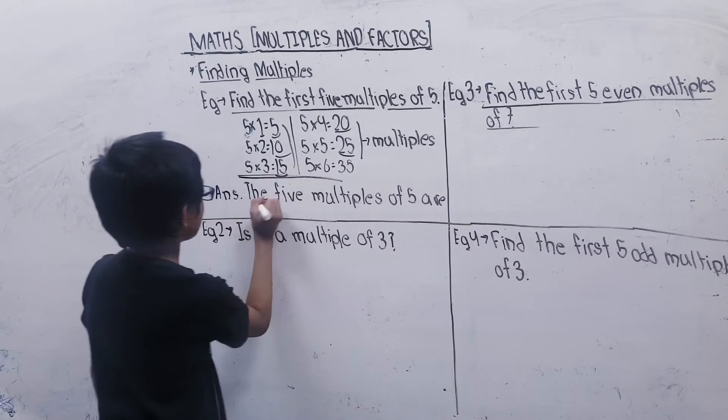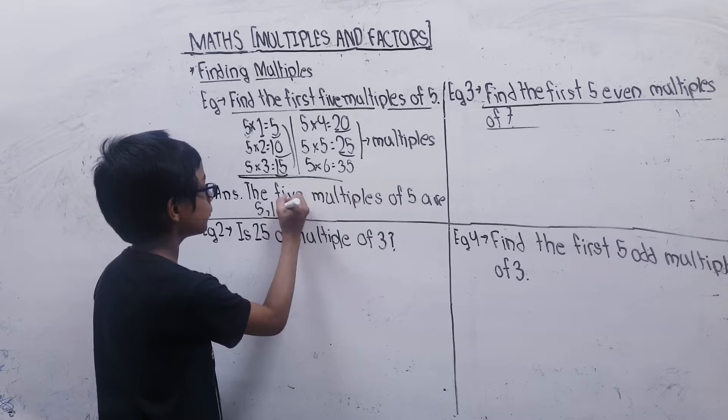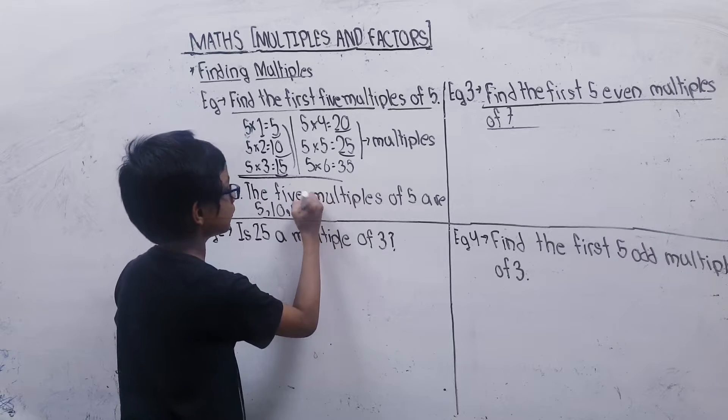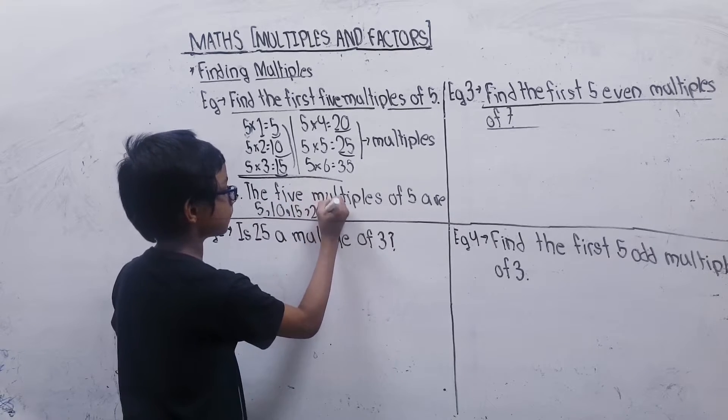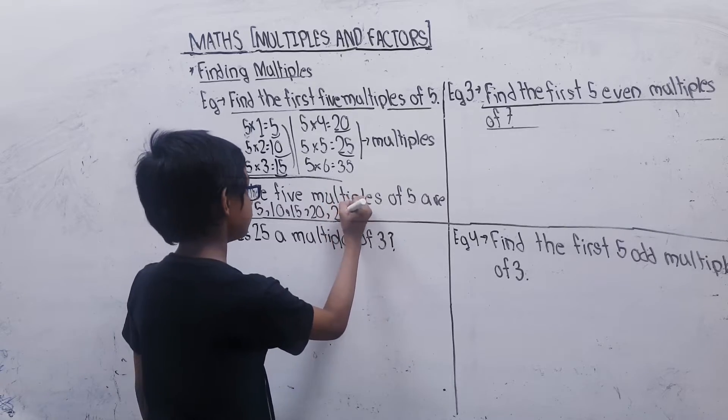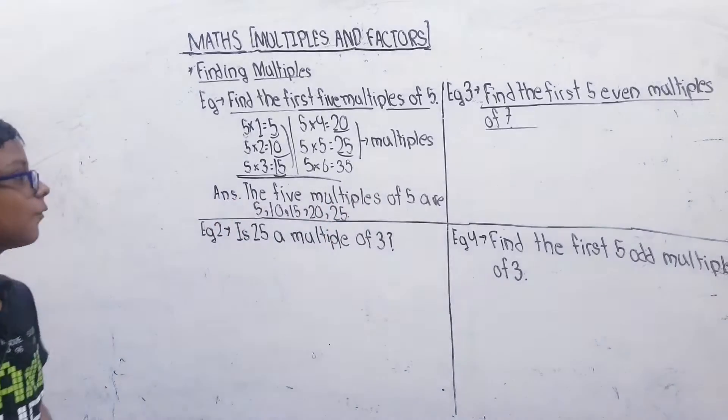So the 5 multiples of 5 are 5, 10, 15, 20, and 25. These are the 5 multiples of 5.